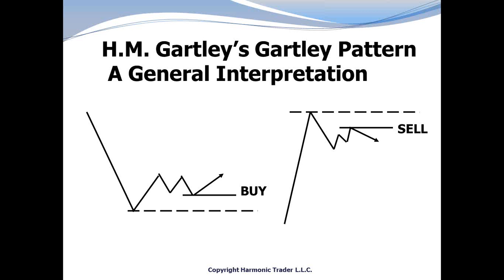He first presented a multiple-price-segmented structure to define a buying opportunity. Essentially, Mr. Gartley was looking for some type of extended decline that was then followed by a multiple-component corrective structure. This type of M-type structure sought to buy on a retracement of an established low.